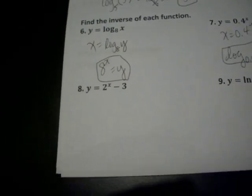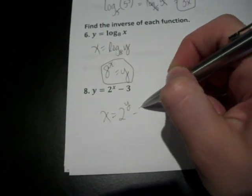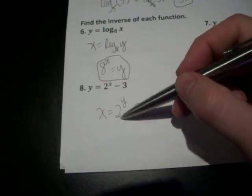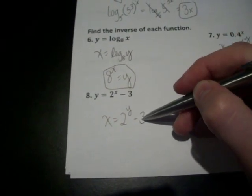Okay, here we've got to do a little bit something different. Switch the X and the Y. Now, I need to isolate that part that has the Y in it, so I'm going to add 3 on both sides.